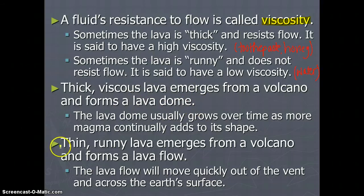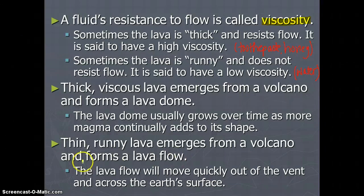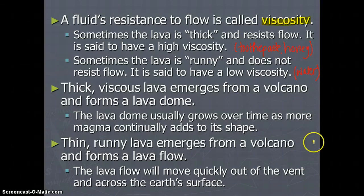When the lava is thin and runny, it's going to form a lava flow. This is where you see those videos of rivers of fast-moving lava. These lava flows move quickly out of the vent and across the Earth's surface. Different types of lava can affect the type of volcano and the type of eruption we have. You need to be familiar with the term viscosity.